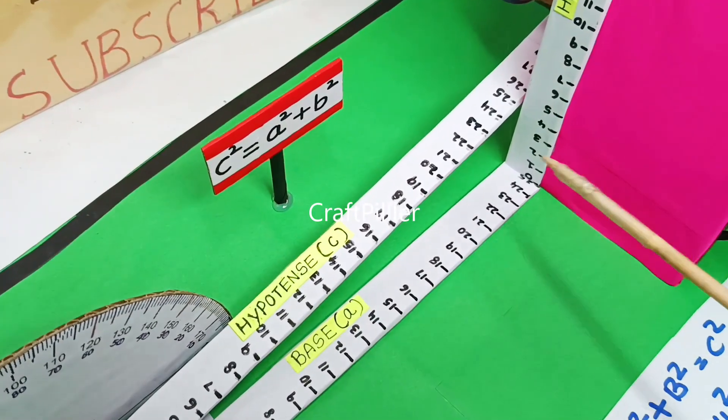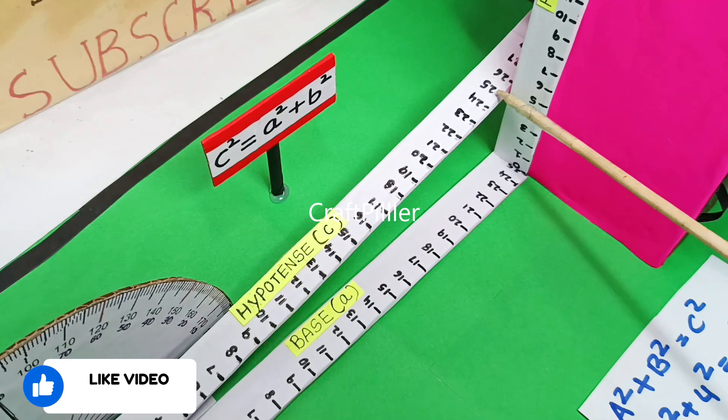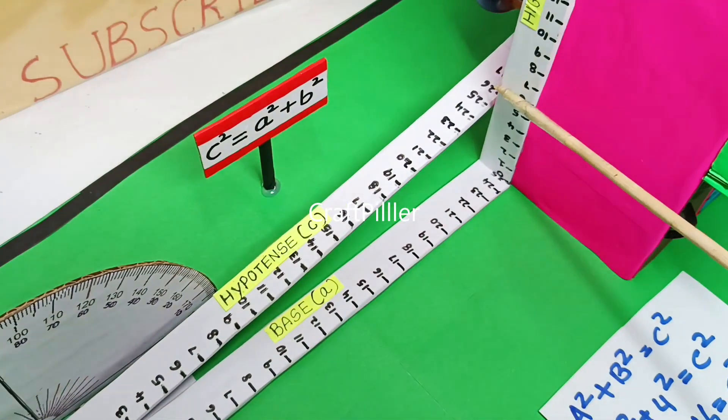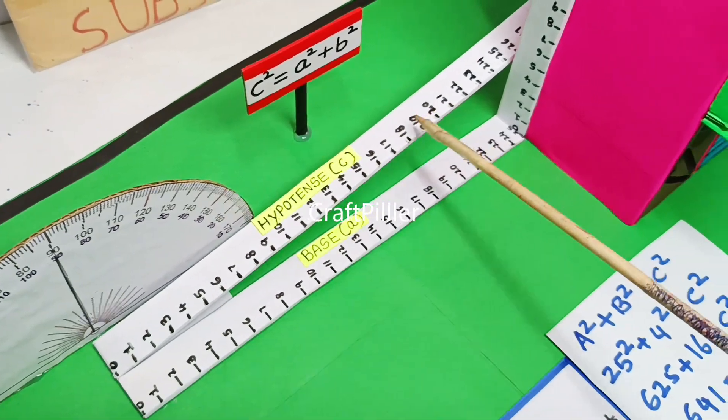Now it has reached 4 centimeters. You can see the hypotenuse measurement is from 0 to 25.